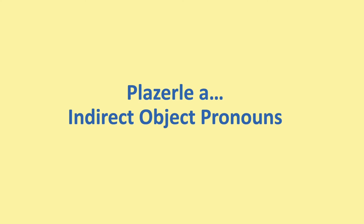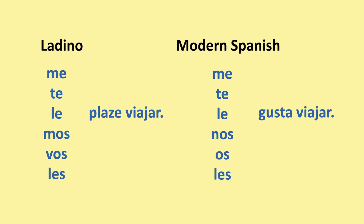To like and indirect objects — 'plazerle a'. The indirect objects in Ladino are: me, te, le, mos, vos, les. For example: 'me plaza viajar' (I like to travel), 'te plaza viajar' (you like to travel), 'le plaza viajar' (he or she likes to travel), 'mos plaza viajar' (we like to travel), 'vos plaza viajar' (you plural), 'les plaza viajar' (they like to travel). In modern Spanish: me gusta, te gusta, le gusta, nos gusta, os gusta, les gusta viajar. The ones that stand out most are 'mos' (Spanish: nos) and 'vos' (Spanish: os).